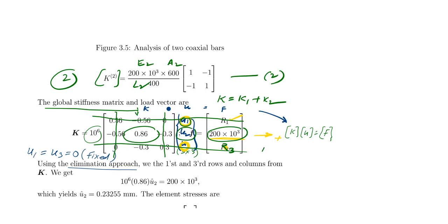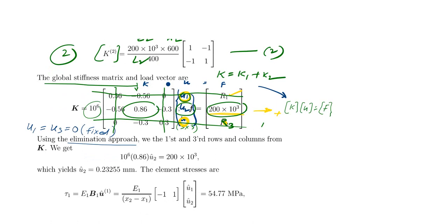What remains is: 10⁶ × 0.86 × u2 = force. Substituting the force value: u2 = (200 × 10³) / (0.86 × 10⁶), giving u2 = 0.2325 mm. This is the answer using the elimination method.